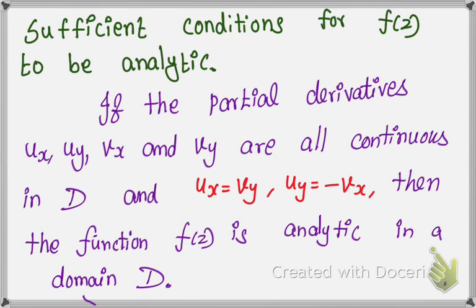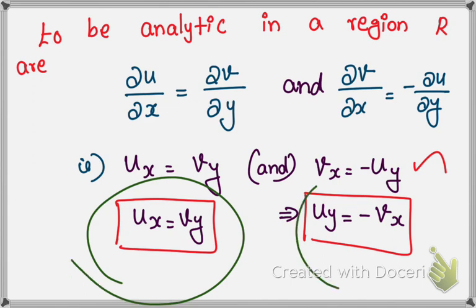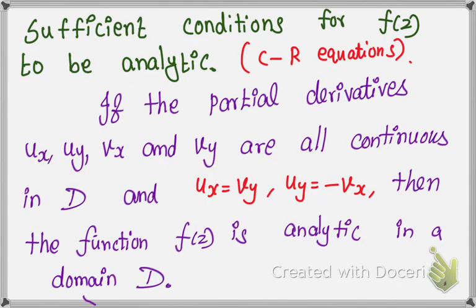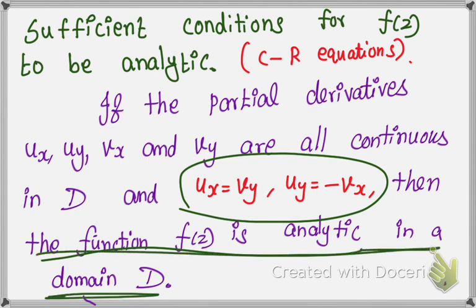We call these the C-R equations — C for Cauchy, R for Riemann. There are two conditions: necessary and sufficient. In the necessary condition, you prove that u_x = v_y and u_y = −v_x. In the sufficient condition, you use those equations to prove that f(z) is analytic in domain D.